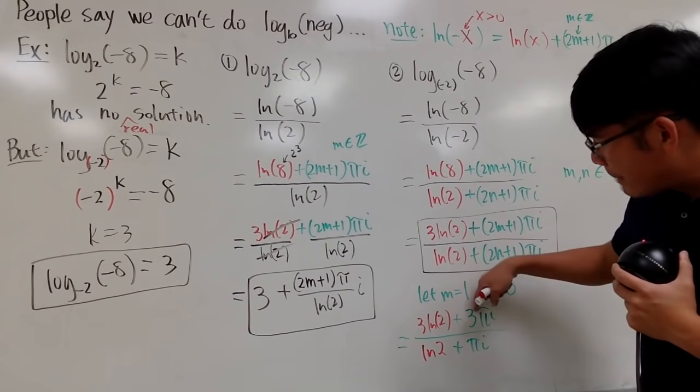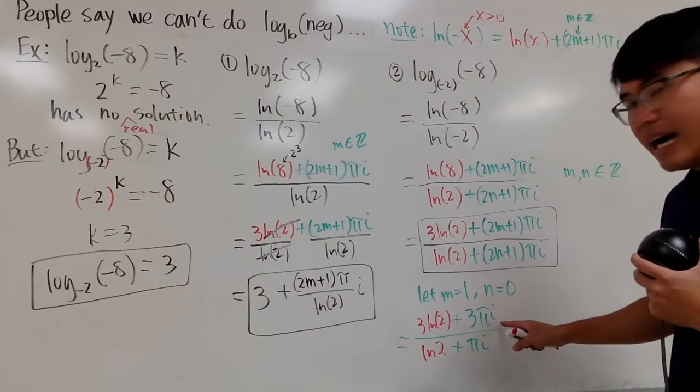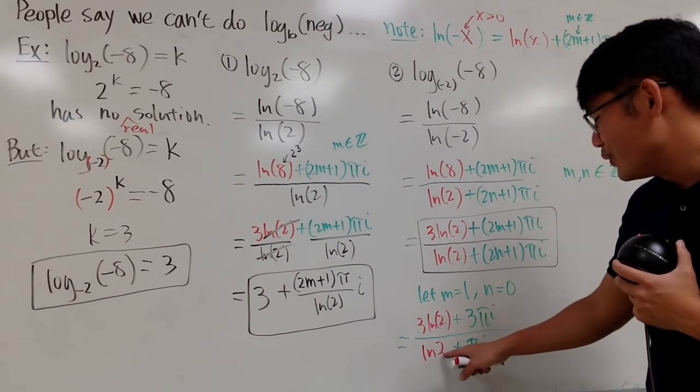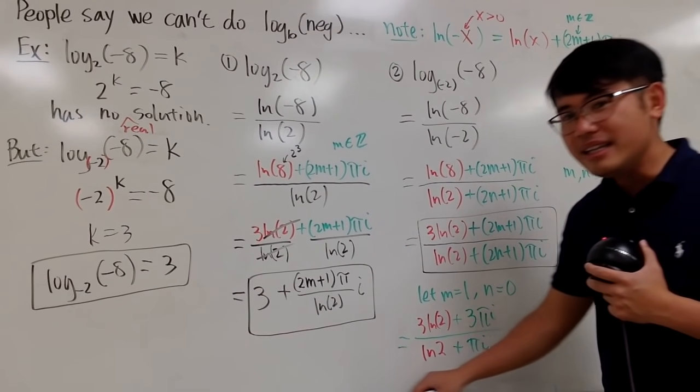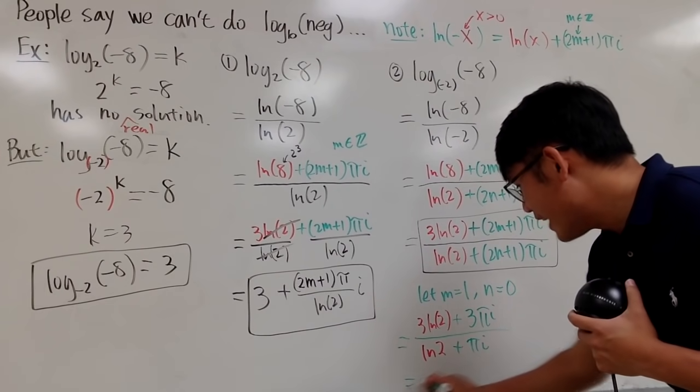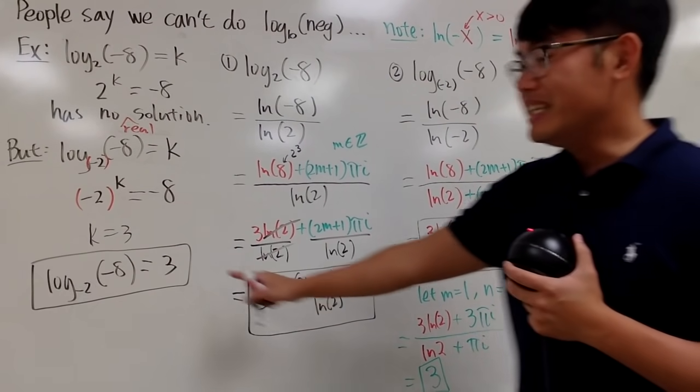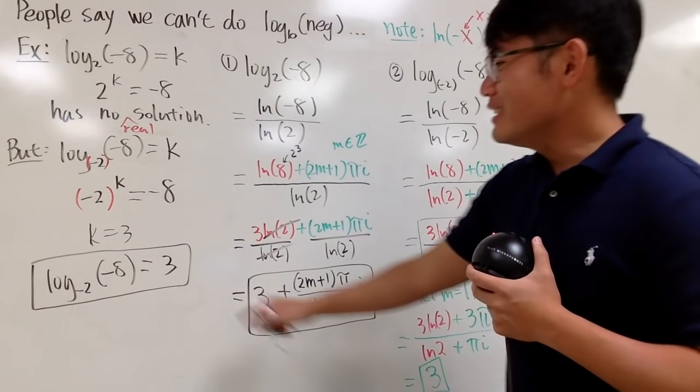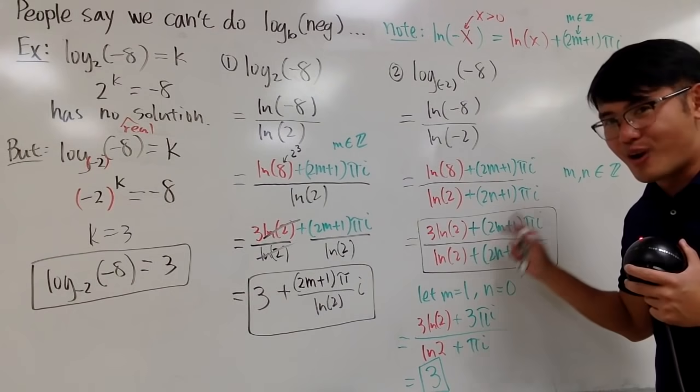On the top, we can factor out the 3. And, we just have ln 2 plus pi i, which is the same as ln 2 plus pi i on the bottom. So, of course, you can cancel, cancel. And, in the end, you will end up with a nice number 3, which is, of course, this 3. So, this 3 is just one of the answers among all the answers from here. And, I think this is so cool.